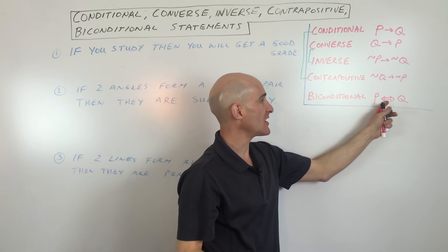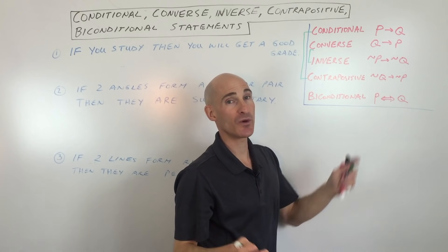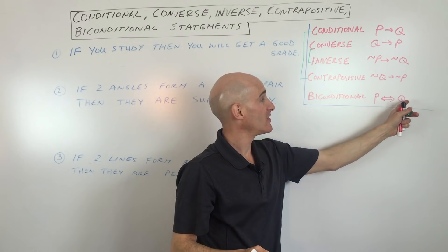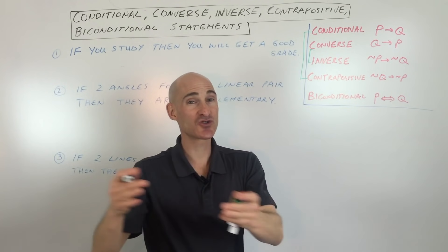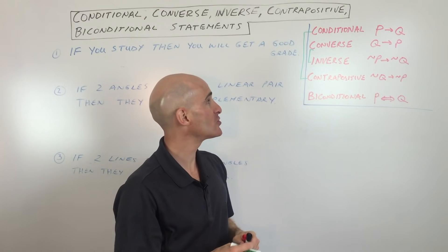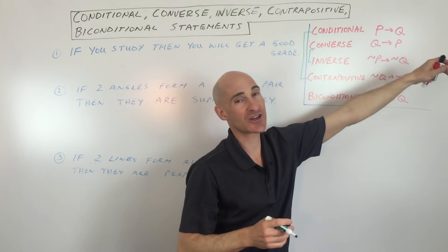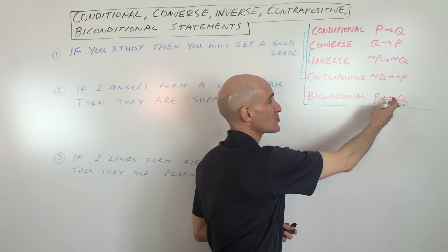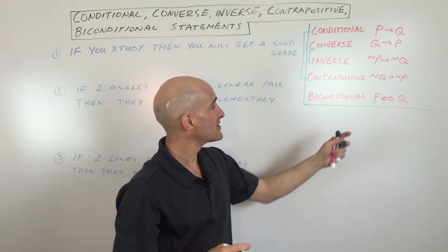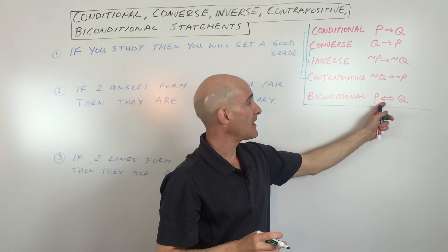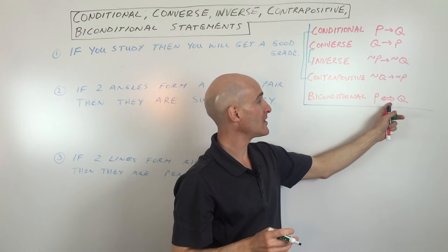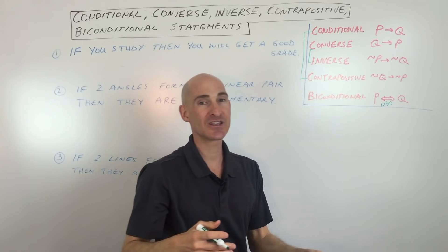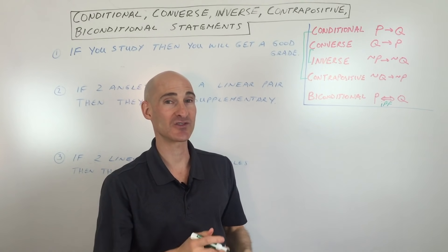The biconditional statement uses a double arrow, meaning if P then Q is true, and Q then P is also true — it's true forwards and backwards. While a regular arrow flows only in one direction, the biconditional says if Q is true, then P is also true. We read this as 'P if and only if Q,' sometimes abbreviated IFF, indicating it's true in both directions.